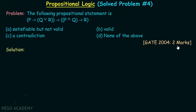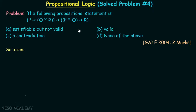We can solve this question with the same idea adopted in problem number three. In this compound proposition there are three propositional variables p, q, and r. We need to choose some truth value combination of p, q, and r in such a way that we can make this compound proposition false, thereby proving it is not valid and eliminating that option.